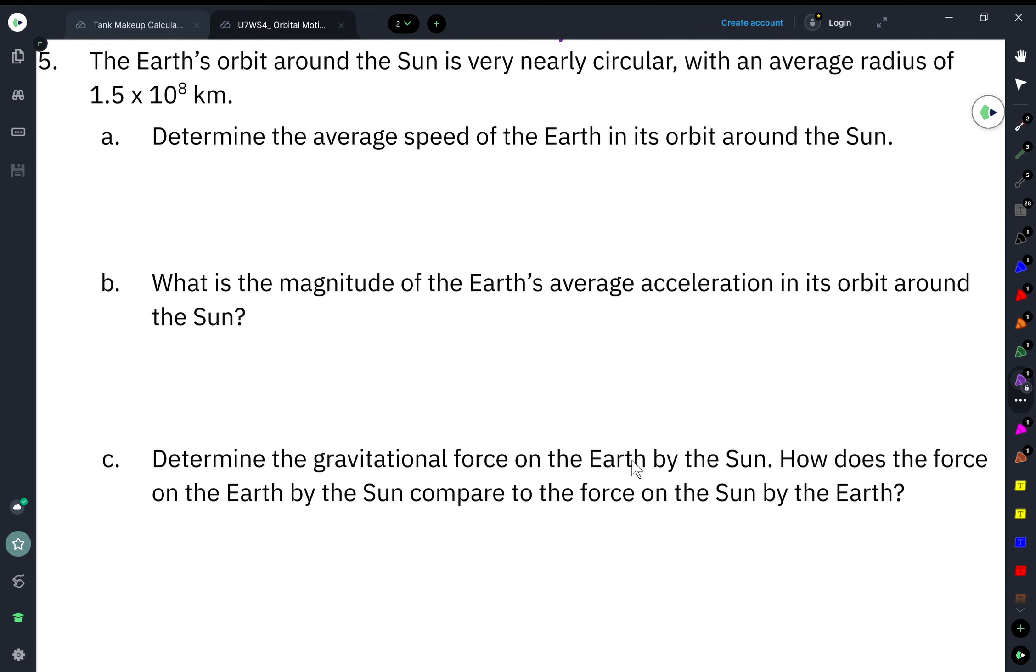Okay, so right now we're going to talk about Unit 7 Worksheet 4, Orbital Motion, Problem Number 5. This is the last problem that we are going to be focusing on.